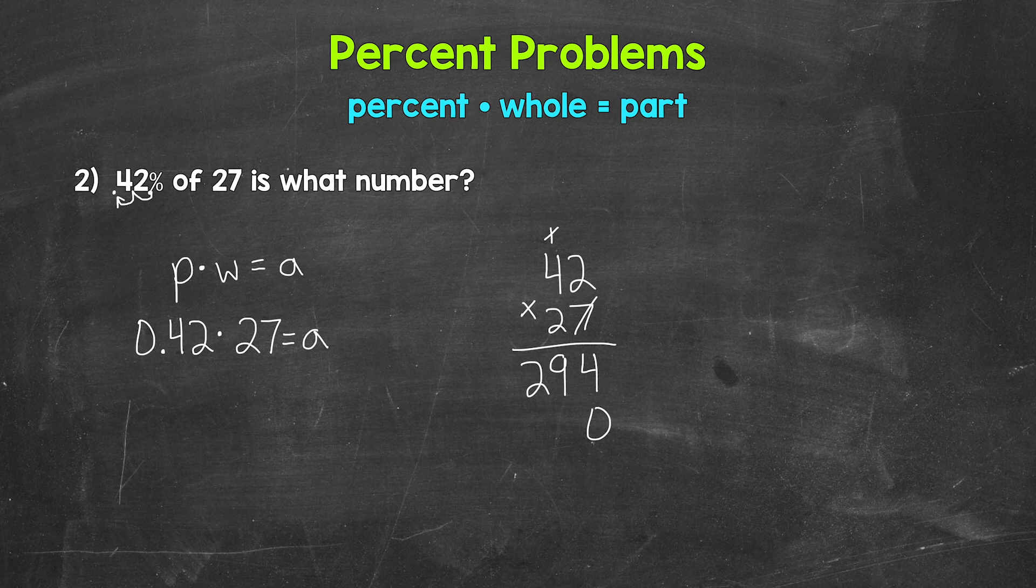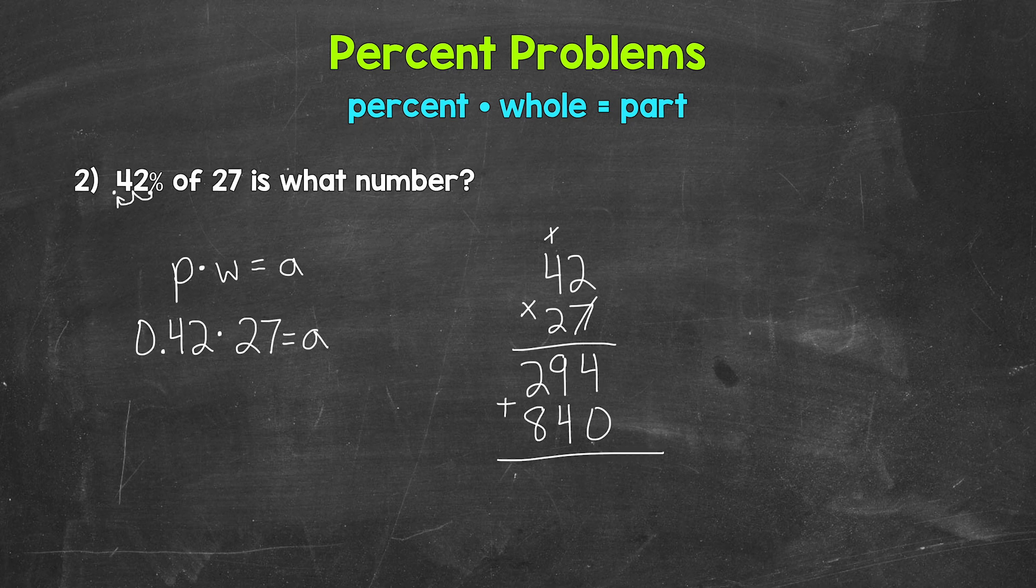We are done with the 7 and this 1. We are moving over a place to the 2. So we need a 0 here. And then we do 2 times 2, which is 4. And then 2 times 4 gives us 8. And now we can add these. 4 plus 0 is 4. 9 plus 4 is 13. 1 plus 2 is 3. Plus 8 is 11.